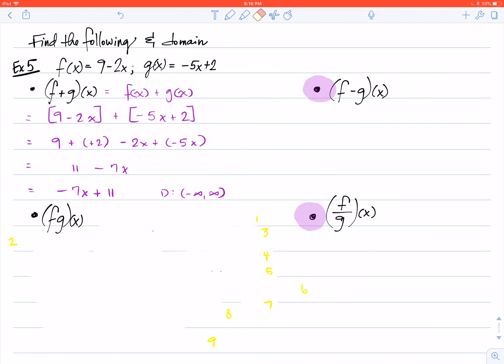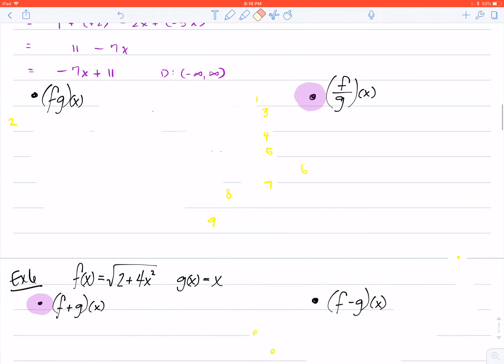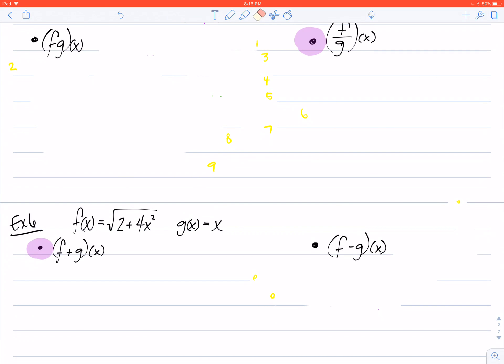That's an addition example. Next, let's look at a multiplying example. Again, as we've done with the others, rewrite it in a nicer fashion: f of x times g of x. Secondly, plug in your f of x, your 9 minus 2x, plug in your g of x.